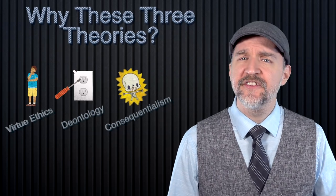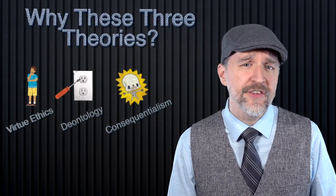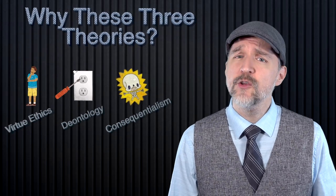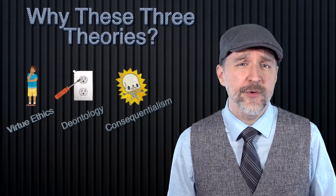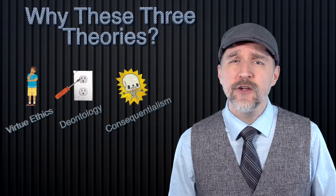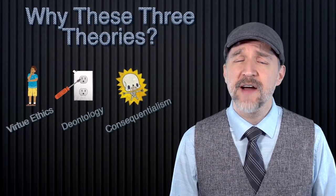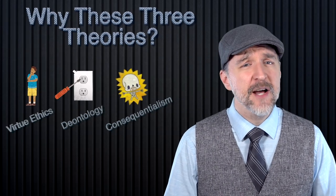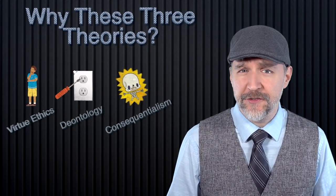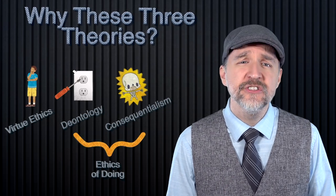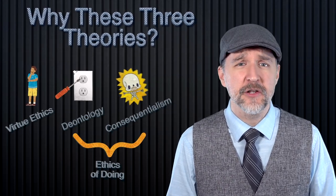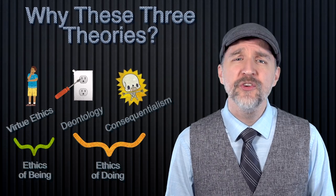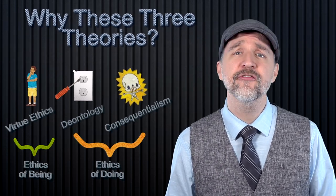We can generalize these theories a bit more. Two of the theories — deontology and consequentialism — focus on which acts are right and which acts are wrong. One of the theories, virtue ethics, focuses on what it means to be a good person, to have a good character, and to live a good life. So we can divide these three umbrella theories into two categories: ethics of doing, which includes the act-focused theories of deontology and consequentialism, and ethics of being, which includes the character-focused theory of virtue ethics.